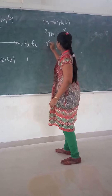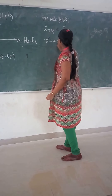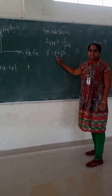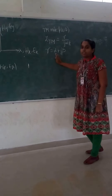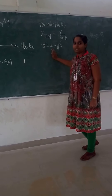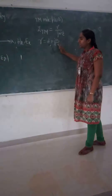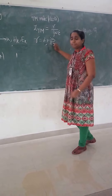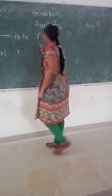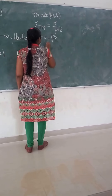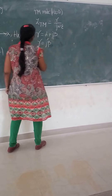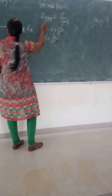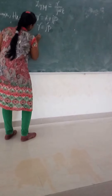Where gamma is the propagation function, gamma equals alpha plus j*beta, where alpha is the attenuation constant. By using this attenuation constant we will not get any phase change, so we consider only j*beta for lossless propagation. Therefore, gamma equals j*beta. Now we substitute this into our wave impedance equation, replacing gamma with the j*beta equation.